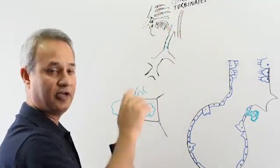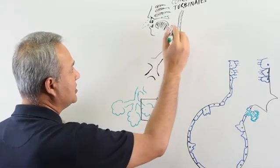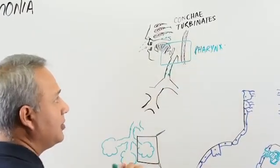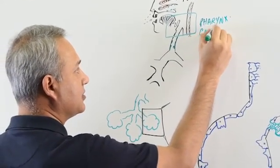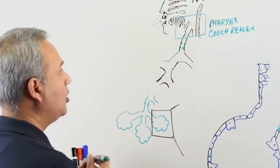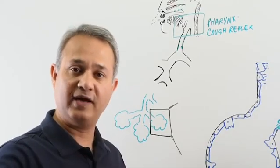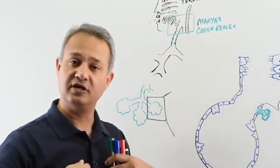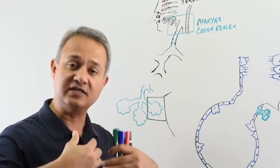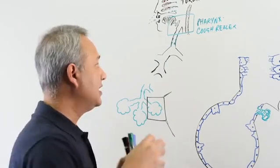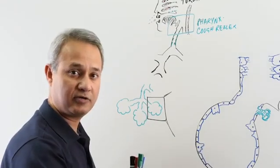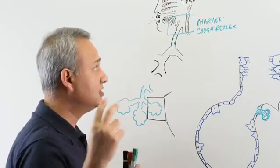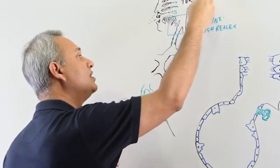As we reach the pharyngeal area, there are a couple of important things. One is the cough reflex. If we have phlegm — the secretions from the lung that wash away pathogens, allergens, pollens, and smoke particles — they bring those things up and we cough them out as phlegm, or sometimes we swallow them. That is one use of the cough reflex. The second use is that the cough reflex helps prevent things from entering the windpipe.